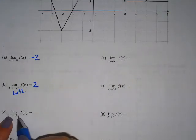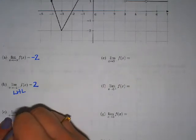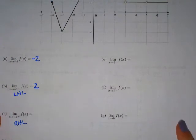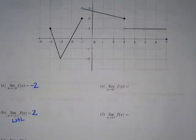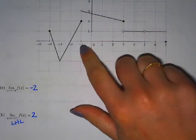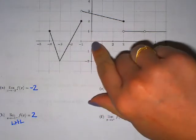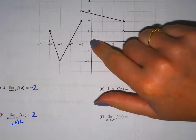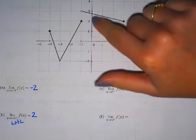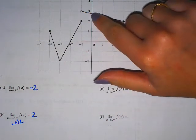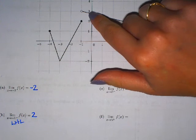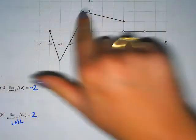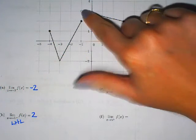The next limit is approaching negative 1 from the positive side — the right-hand limit. I go to the right of negative 1, starting near 0. There's no graph below at 0, so I hop up here. As I get close to negative 1 from the right side, my y value is up at 3. So the right-hand limit is 3.